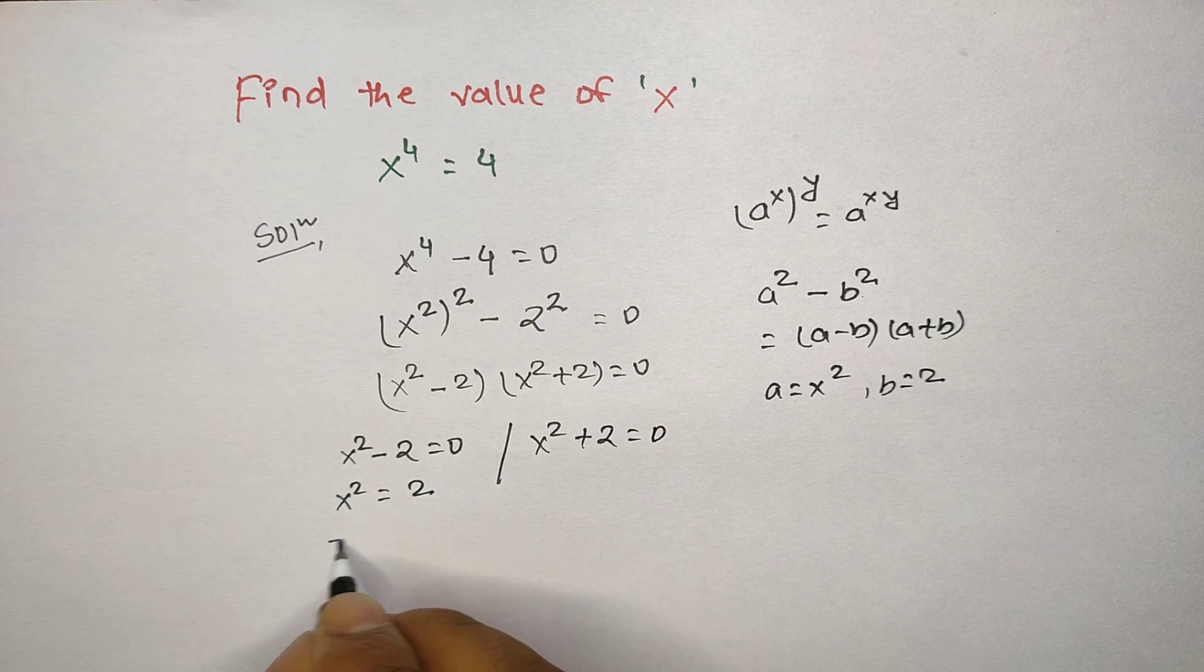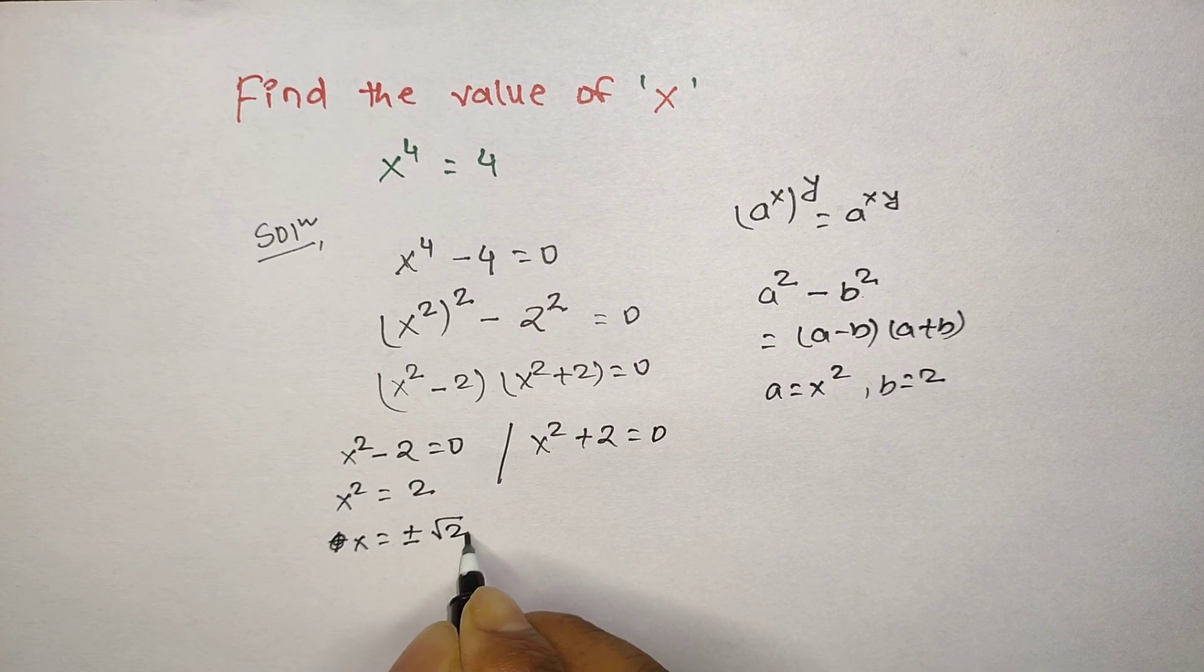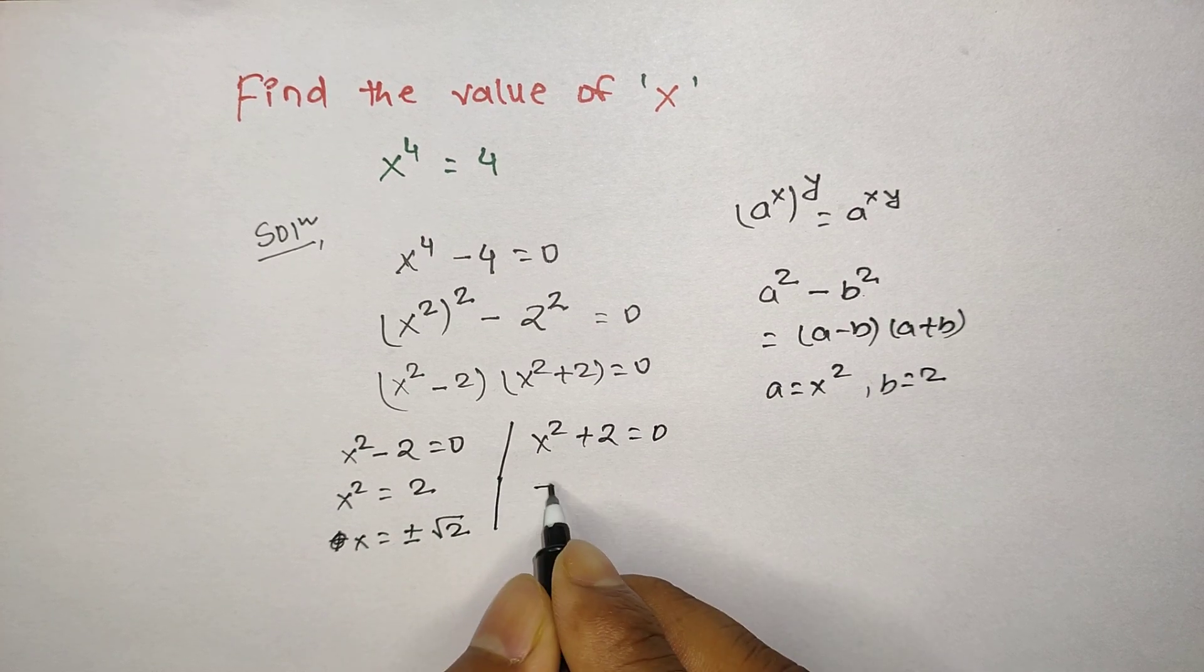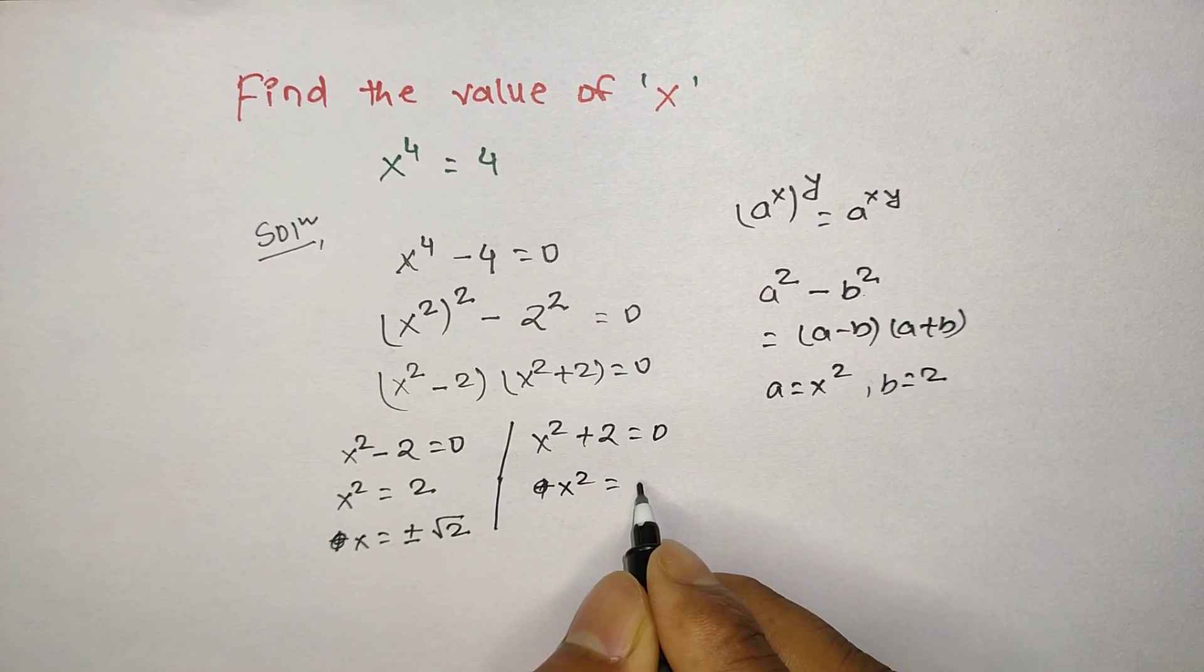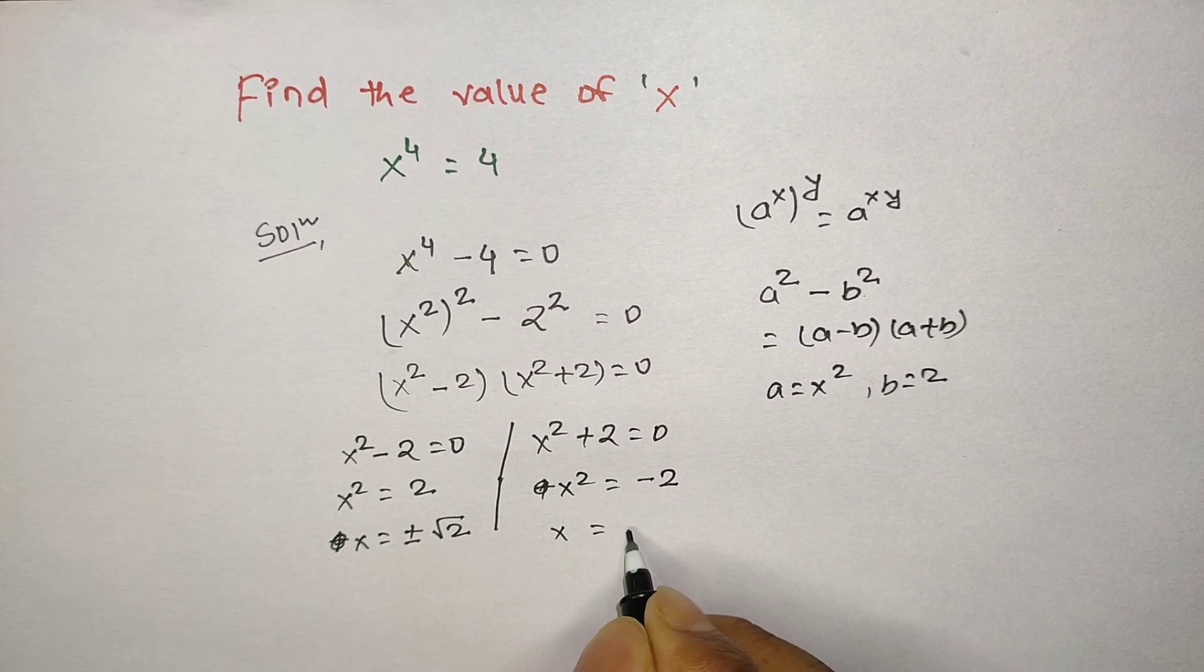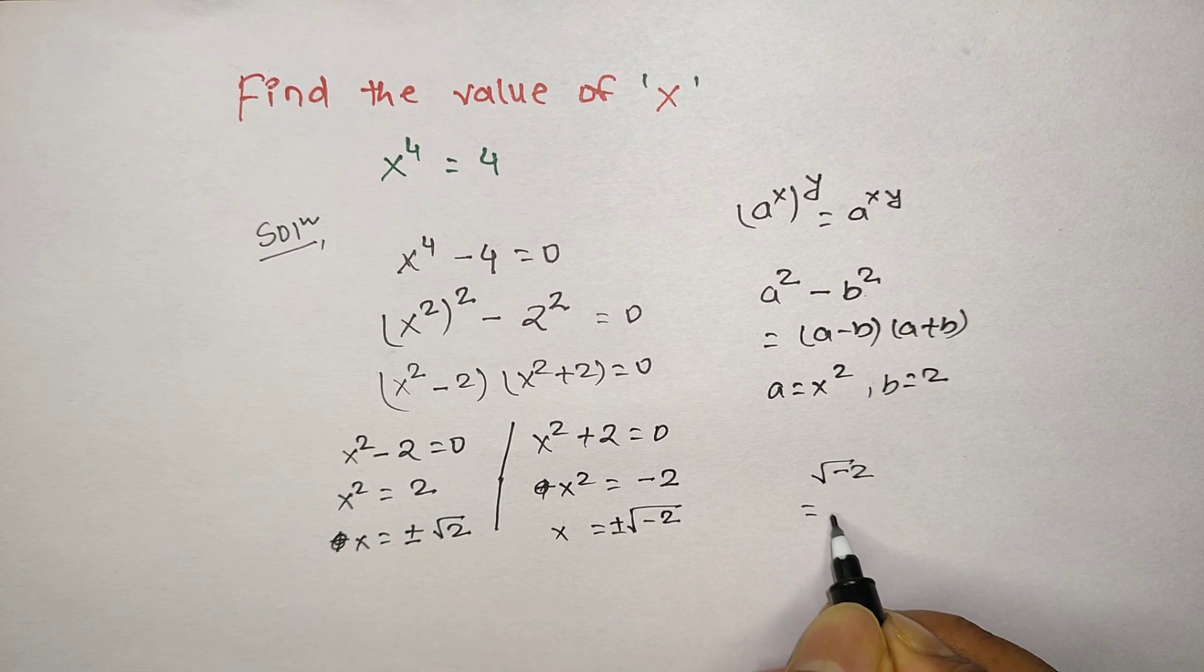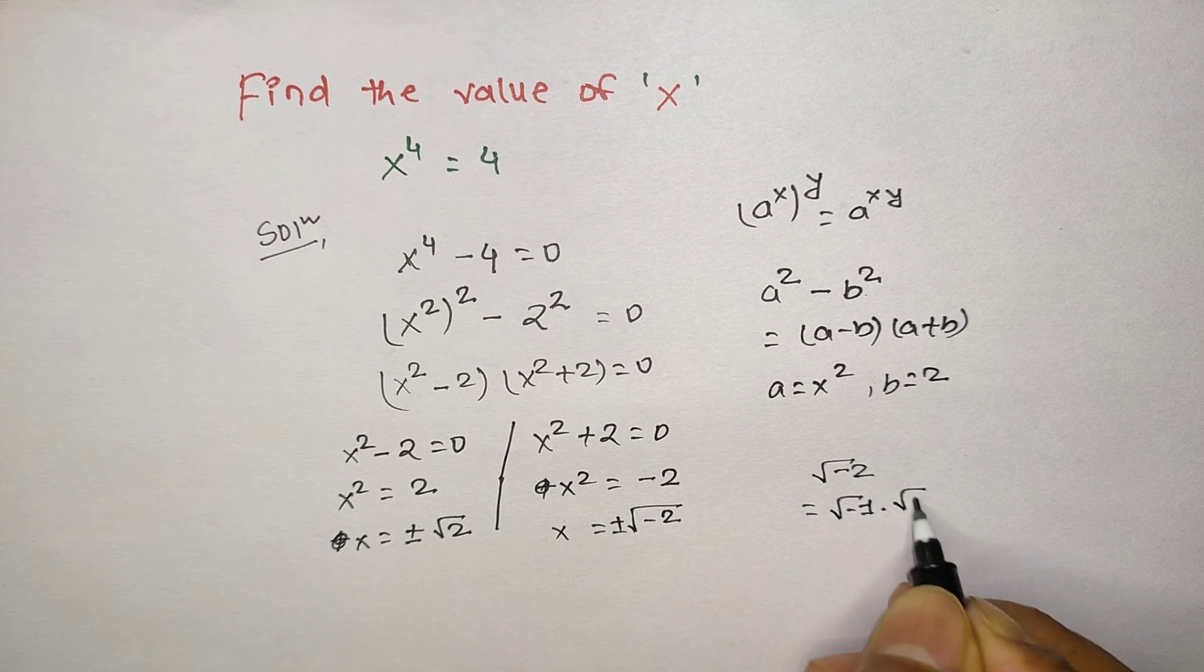Similarly here, if I move x square to the right hand side, it is negative 2. And if I move the square to the right hand side, it is plus or minus square root of negative 2. As you know, negative 2 is the multiple of square root of negative 1 times square root of 2. And negative 1 is called iota, and this is square root of 2.